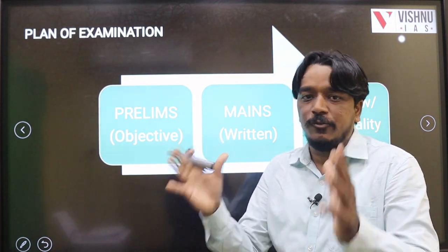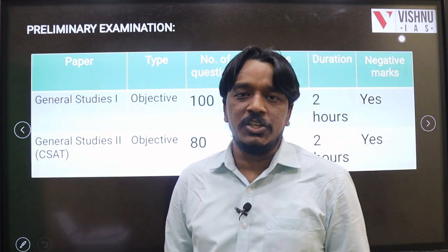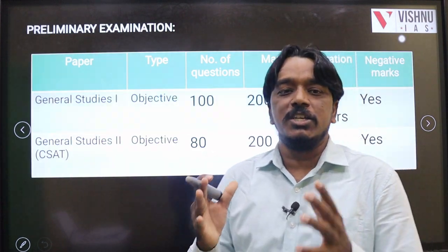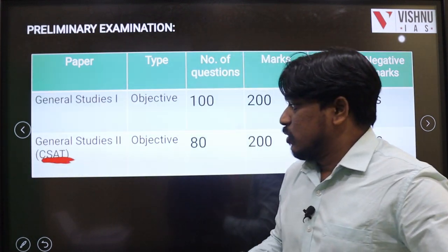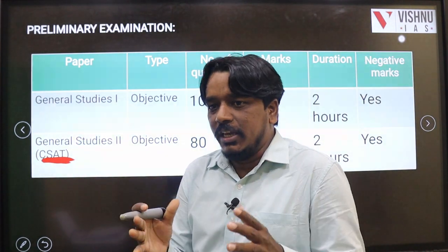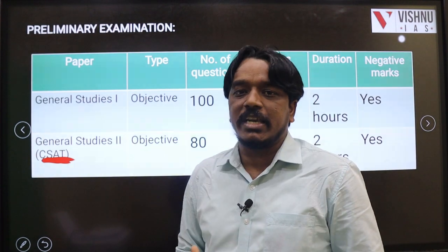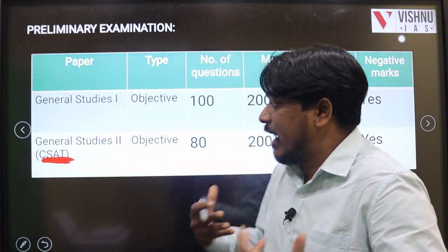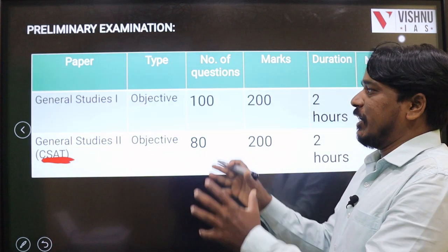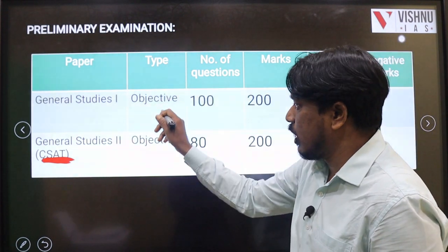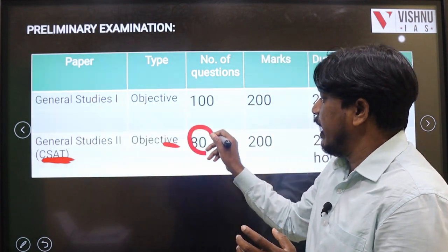The preliminary examination consists of two papers: General Studies Paper 1 and General Studies Paper 2, which is CSAT — Civil Services Aptitude Test. This test is introduced because whenever writing these exams, we require certain abilities and aptitude. CSAT tests that aptitude. Both papers are objective type in nature. CSAT Paper 2 consists of only 80 questions.